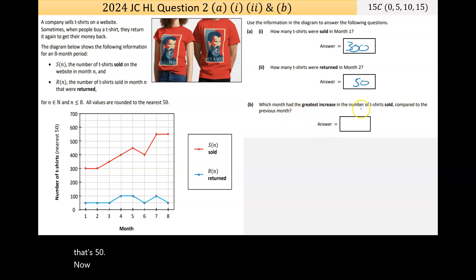Which month had the greatest increase in the number of t-shirts sold compared to the previous month? This has the steepest slope, the rise over the run. This would be 50 over 1, a change of 50, 50, 50, but this one here is 150 over 1, a change of 150. So that's month 6 to month 7. I can see how people might make it confusing there. It's 7, so I'm sure the marking scheme would take account of that.